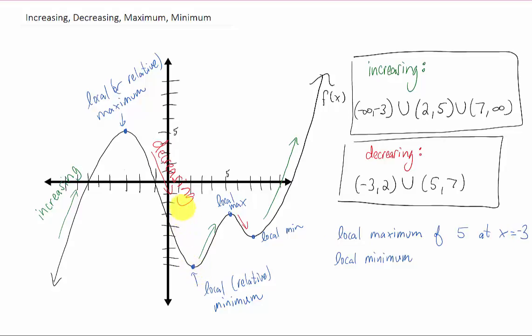We have a local minimum of negative eight occurring at x equals two. We then follow along this path, and we get another local maximum of negative three occurring at x equals five. And one more local minimum occurring right here with a value of negative five at x equals seven.